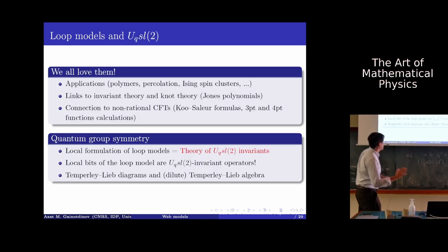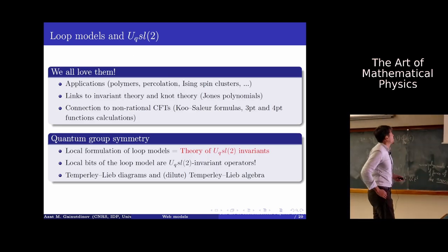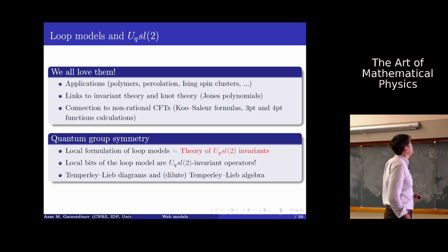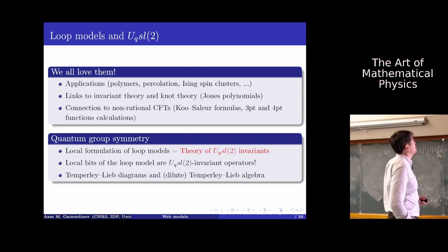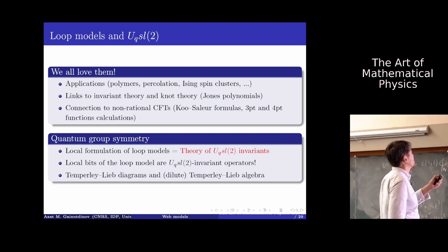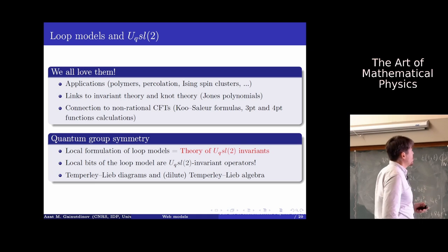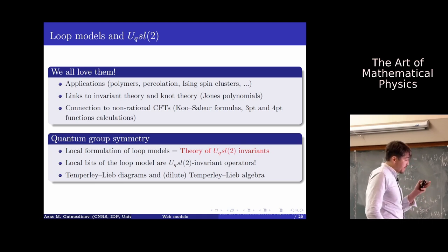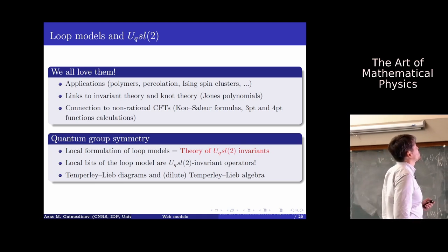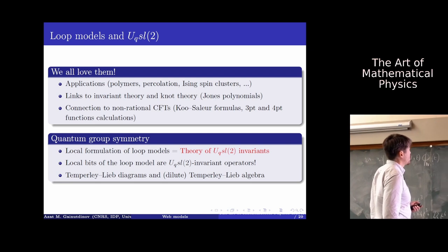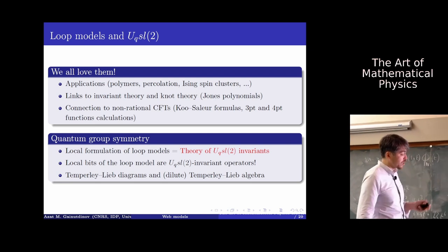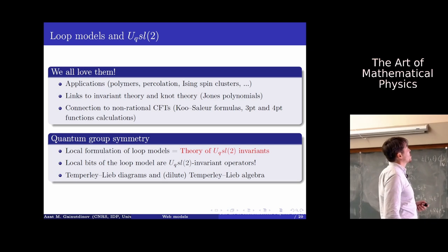The continuum Coulomb gas is one of the best tools to study the continuum limit of these models. In particular, Hubert with Di Francesco, Zuber, Duplantier, and Cardy had pioneering works on these models. We all love them because they have numerous nice applications — they are beautiful and useful in polymers, percolation, and describing spin clusters.